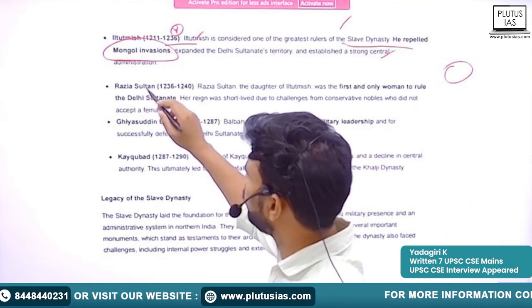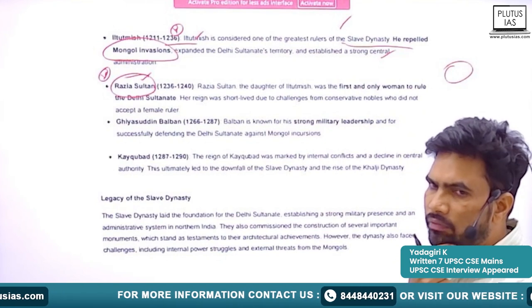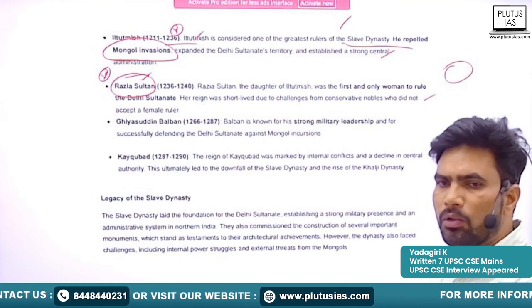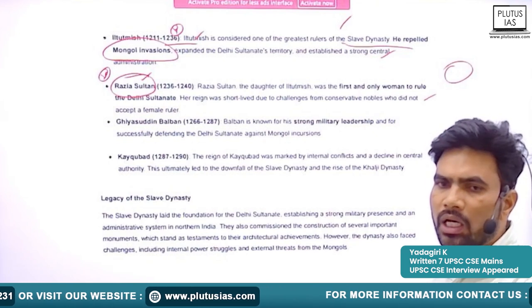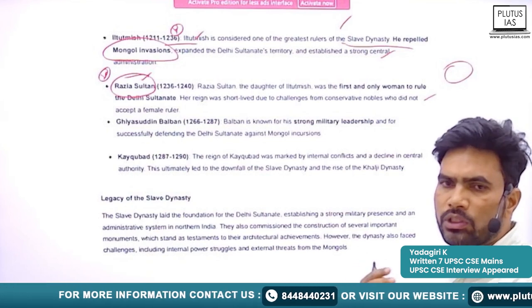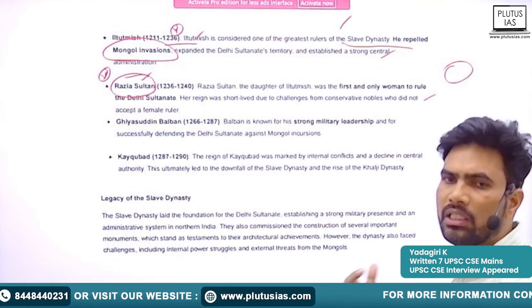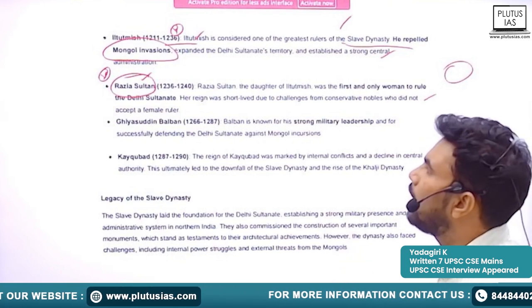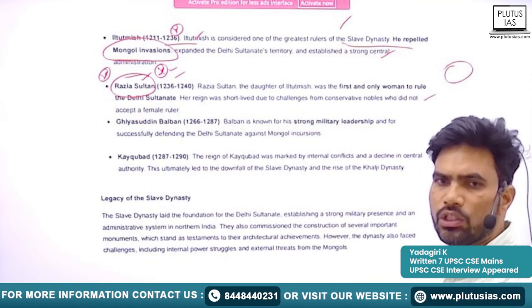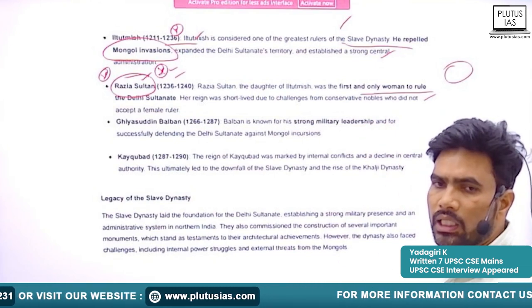He was also successful in establishing a strong centralized administration in India. Next ruler is Razia Sultana. She is the first and only woman ruler in the entire Delhi Sultanate. During the Mughal period, we briefly see the dominance of Nur Jahan, but Nur Jahan never became the queen — she was ruling from the shadow of Jahangir only, making almost all important decisions but not directly assuming the throne. Razia Sultana was a peculiar case — she directly assumed the throne.